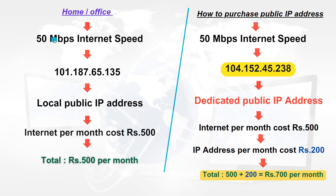We have a 50 MBPS internet connection. You will see the default IP address. You will see the internet work out. You will see the public address. If you go to the browser, you will see the IP address — here it is 20 MBPS. If not, you will see the backup sources for a different person. It is a local public IP address.